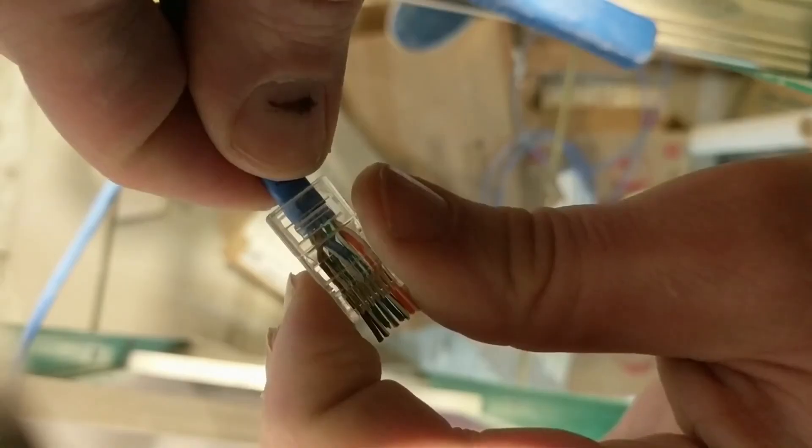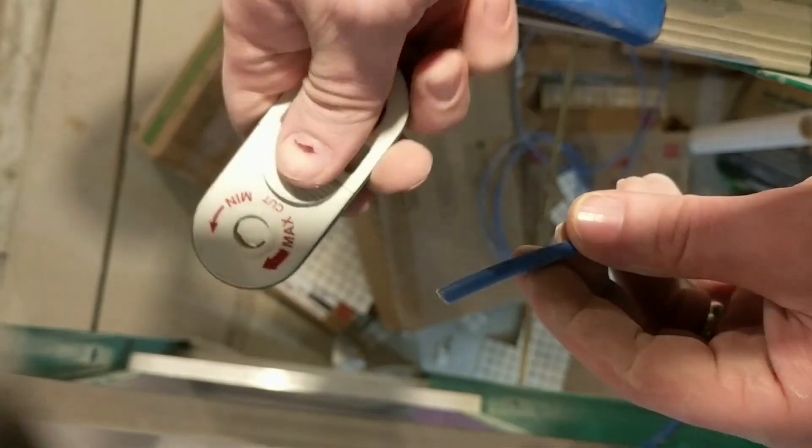In this video, I'll show you how to use the EZ crimp tool to terminate an Ethernet cable with an RJ45 end.